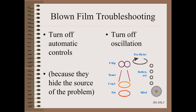In some cases, we may even find that the automatic controls destabilize gauge profile despite the sales pitch of the suppliers. This can happen due to a combination of inadequate sensing resolution, poor control actuators, poor mapping, or a poor control algorithm.